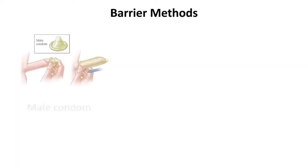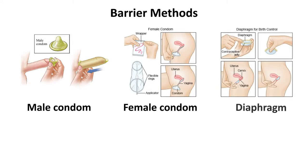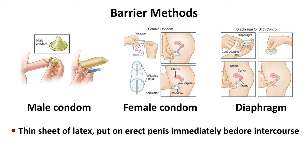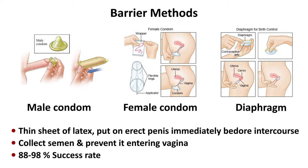Barrier methods include male condoms, female condoms, and diaphragm. Condoms are thin sheets of latex which are put on the erect penis immediately before intercourse. They collect semen and prevent it from entering the vagina. Condoms have a success rate of 88% to 98%.